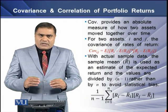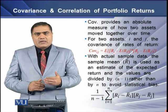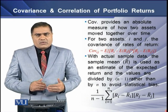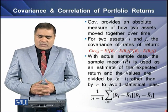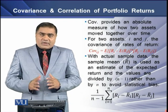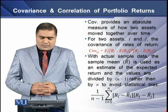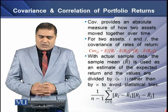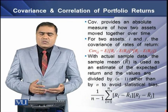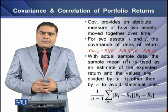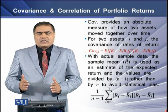We divide the covariance by N minus one because we are using the sample mean. This means that with actual sample data, the sample mean or R-bar is used as an estimate of the expected returns, and the values are divided by N minus one rather than by N. This is done to avoid statistical bias.